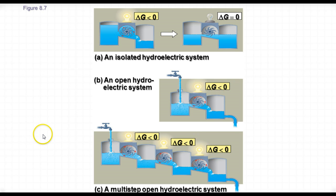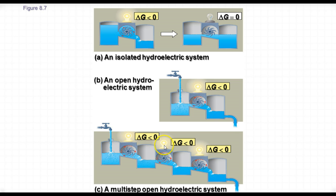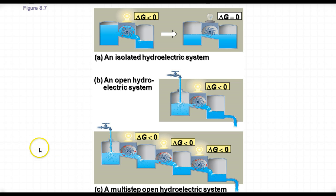What if we had a multi-step open system? At each location where we have a turbine, we can be generating electricity. So we can end up actually producing more electricity with the same input and outflow that we had in the simpler system. This is basically what cells do — they undergo a series of reactions, and each step in the reaction releases more of the energy.